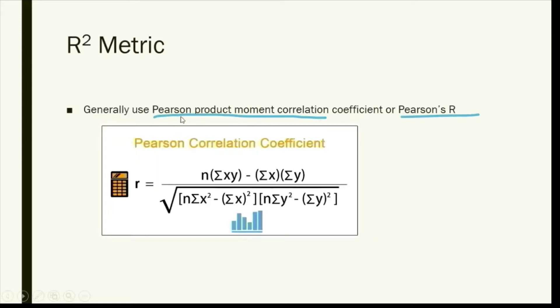Generally we use Pearson Product-Moment Correlation Coefficient, or you can also call it Pearson's R. It is given by small r, and this is the formula for this. X and Y are predicted and observed values. Take sigma of it and take them individually, square them, and so on.